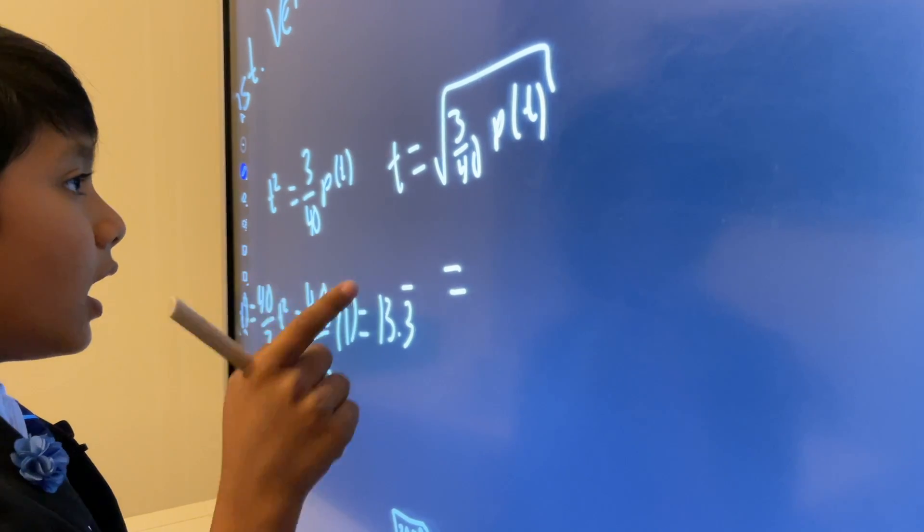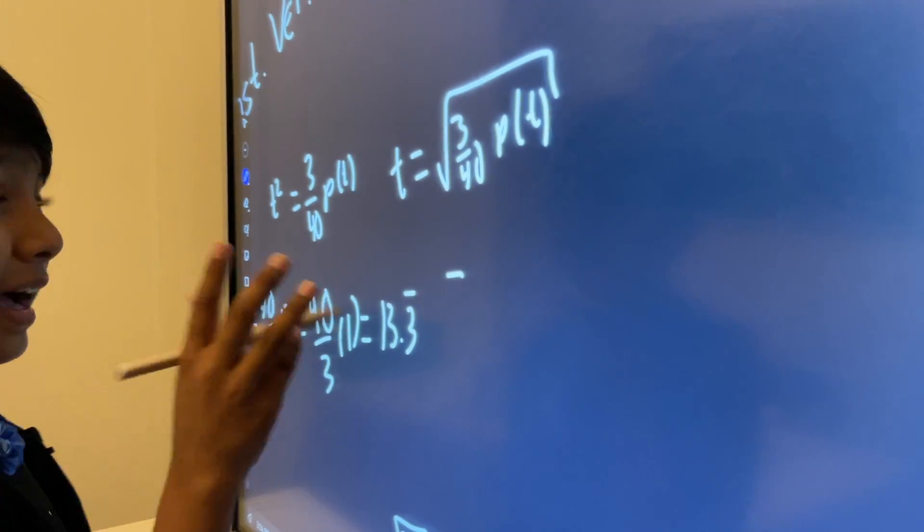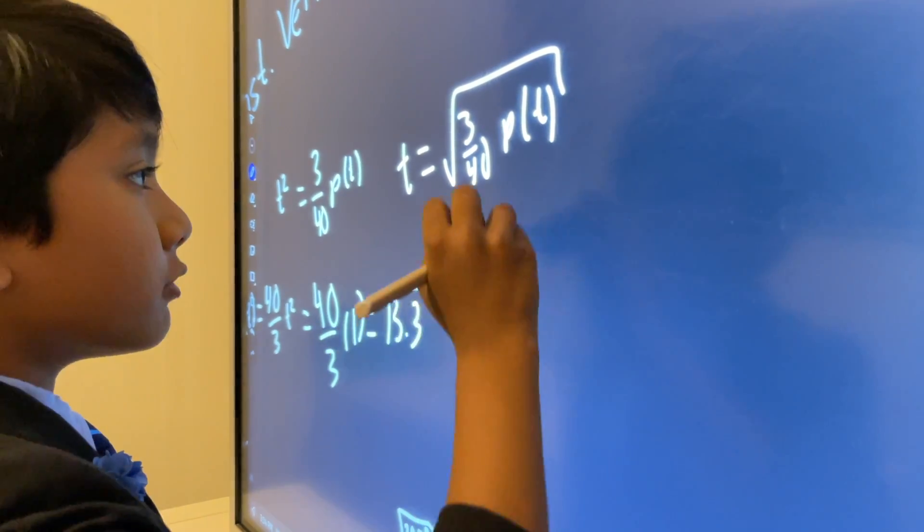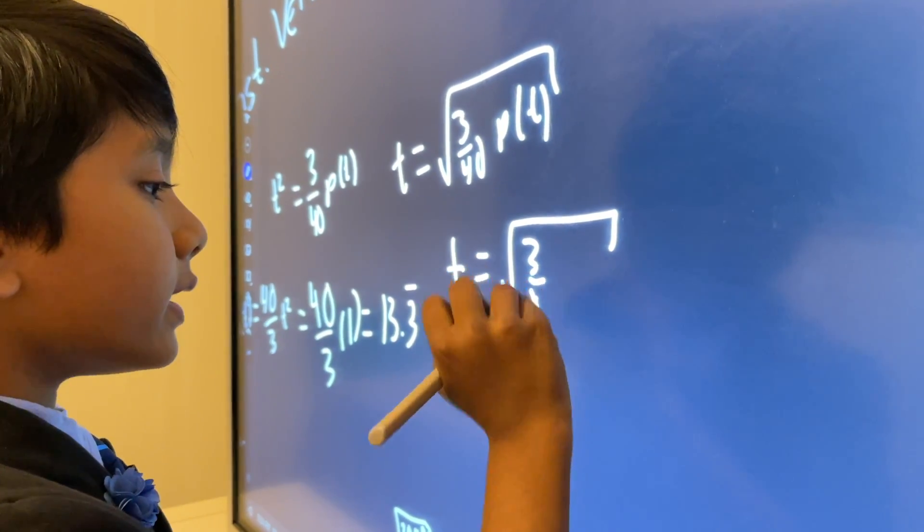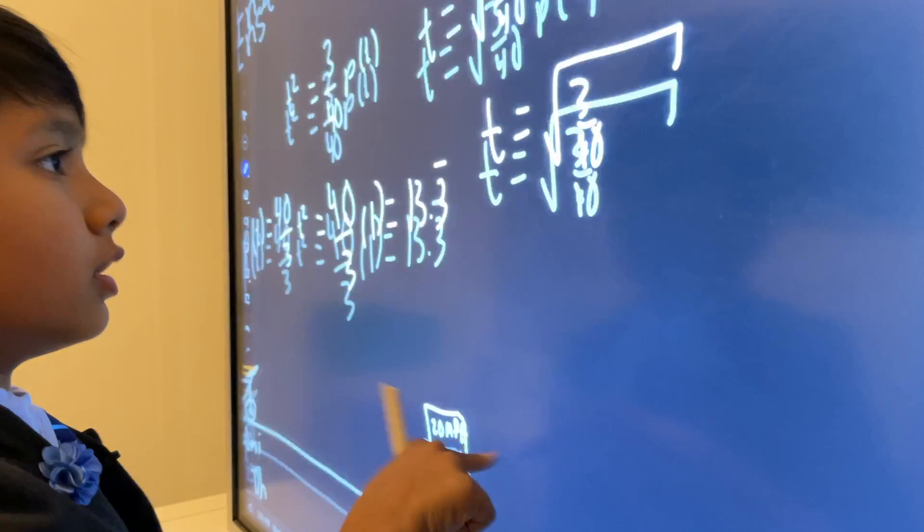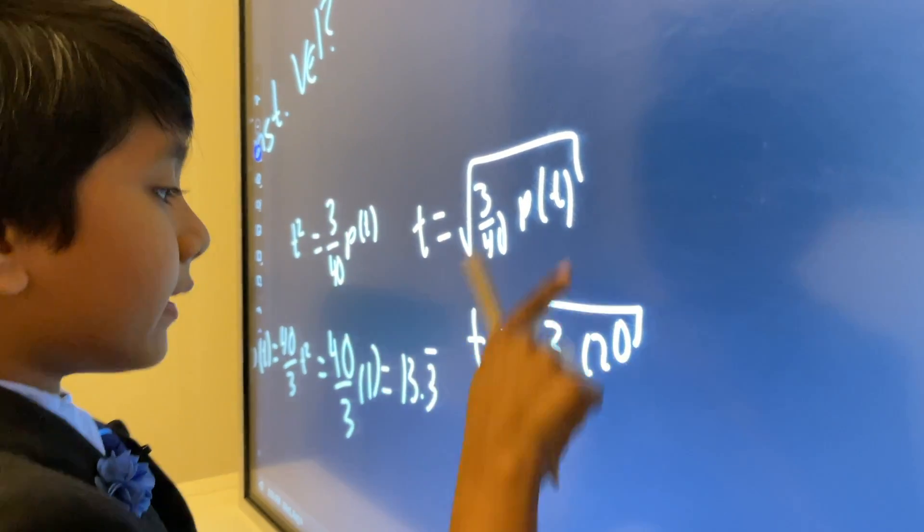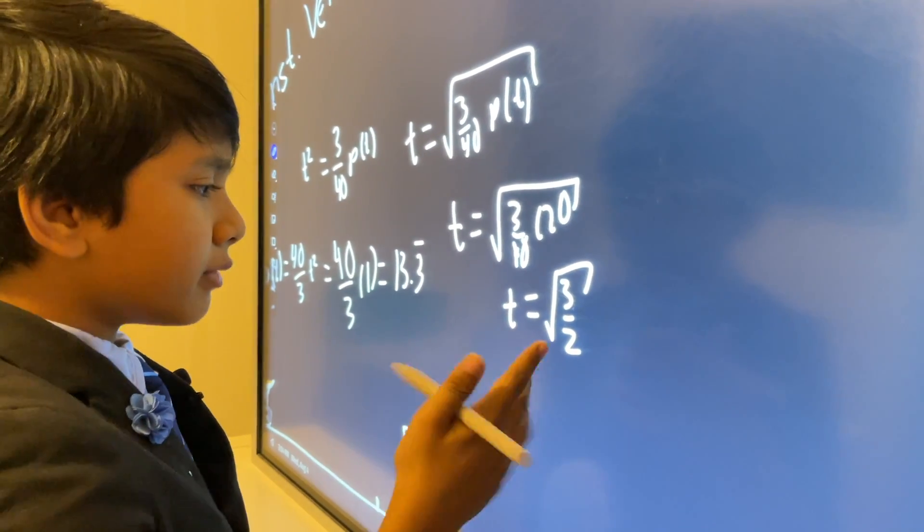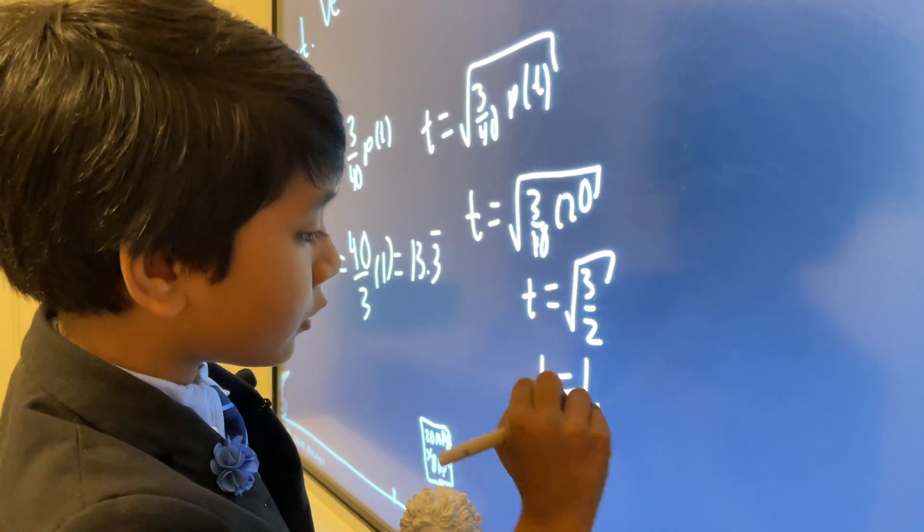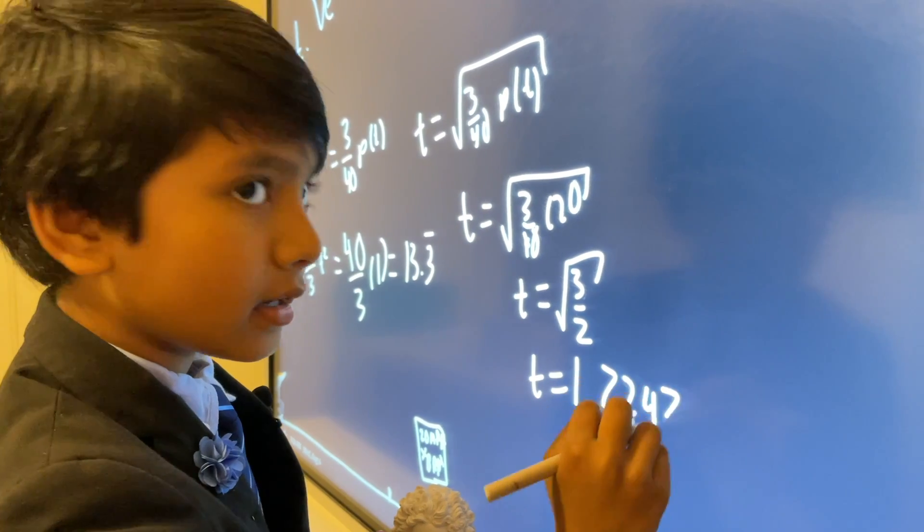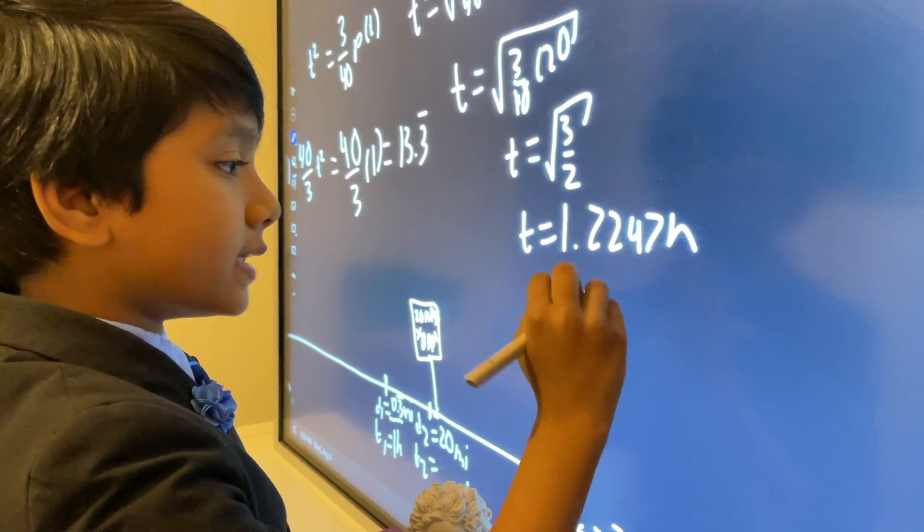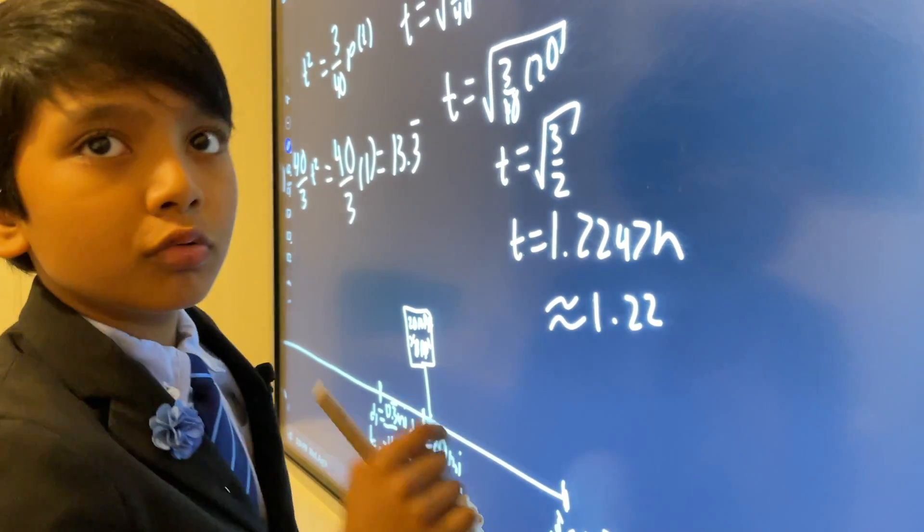So, when we plug in time, I mean when we plug in position function, we get T is equal to 3 over 40. Sorry, what was position again? Oh, 20. So, that gives us the square root of 3 halves, or what is about 1.2247 hours, which we will round, for our purposes, to 1.22 hours.